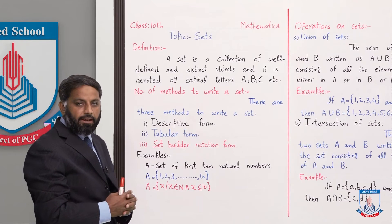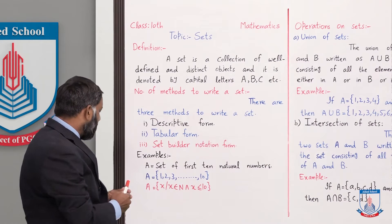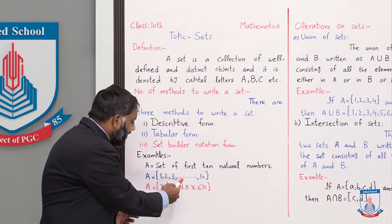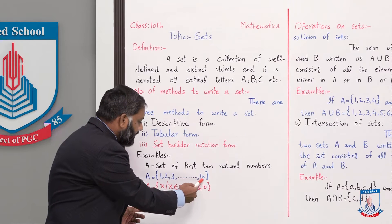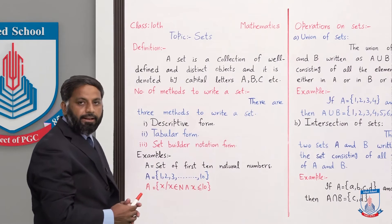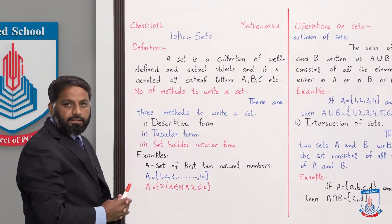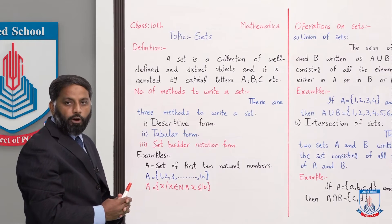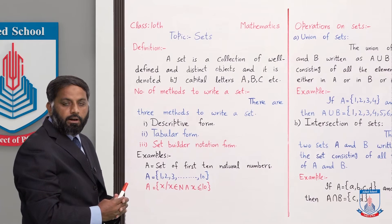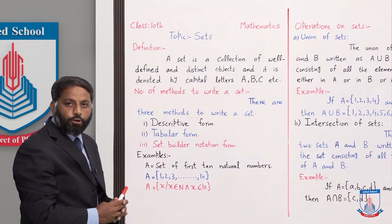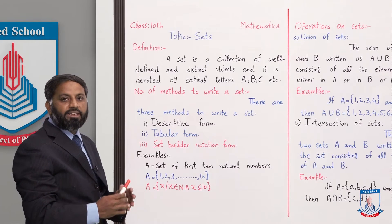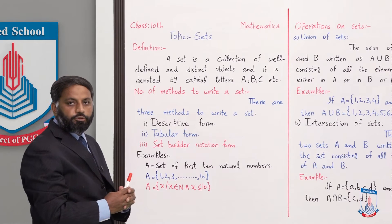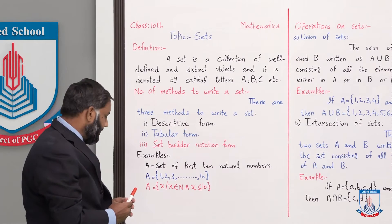اسی set کو اگر tabular form میں لکھیں گے تو: {1, 2, 3, ... 10}۔ This is tabular form۔ اور اسی set کو اگر set builder notation form میں لکھنا ہے تو اس کا طریقہ یہ ہے: